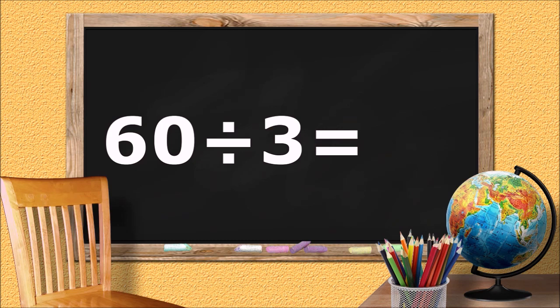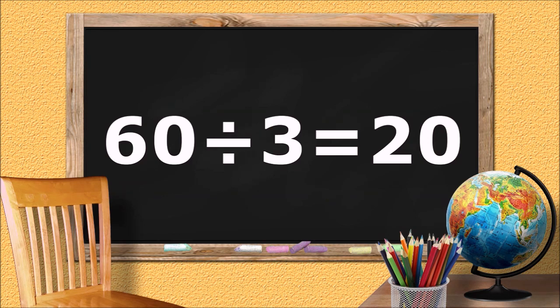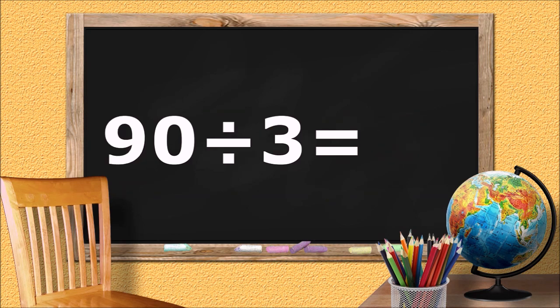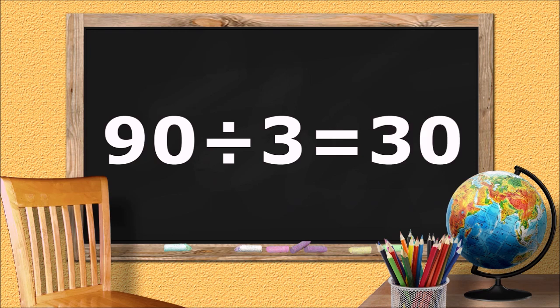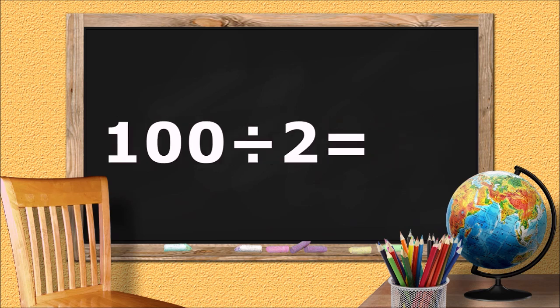Sixty divided by three equals... twenty. 90 divided by 3 equals... 30. 100 divided by 2 equals... fifty.